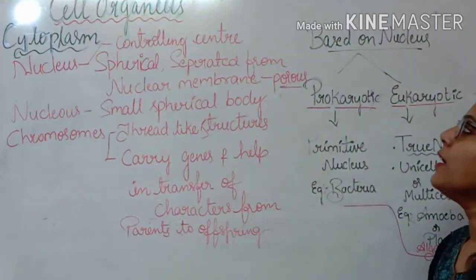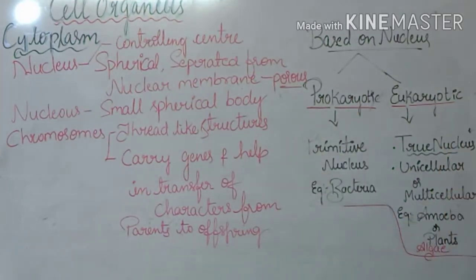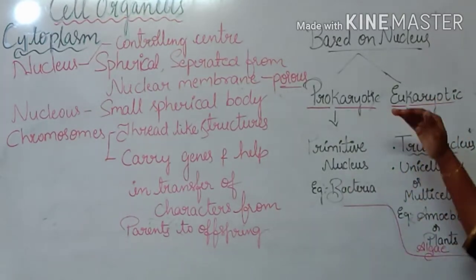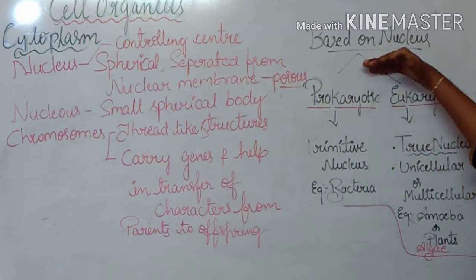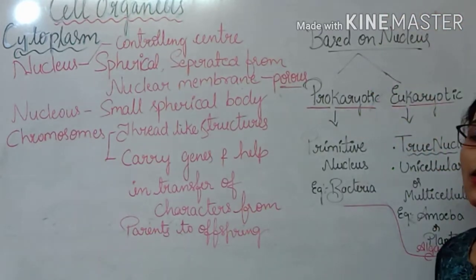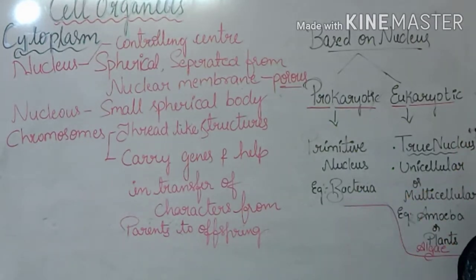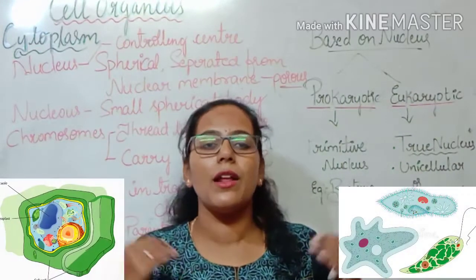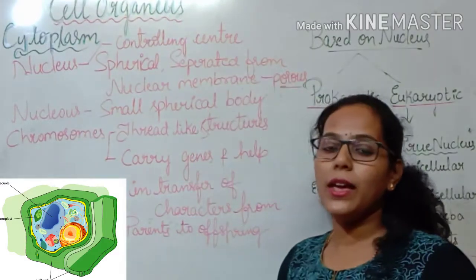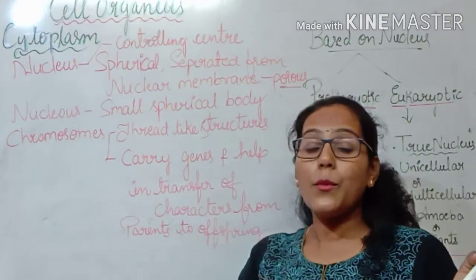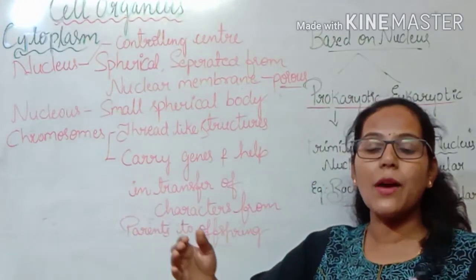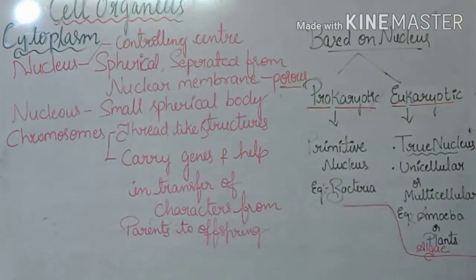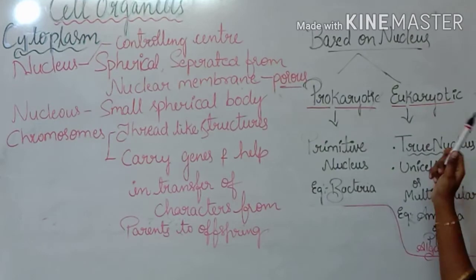Before getting into this session, I would like to tell the difference between the prokaryote and the eukaryote. Prokaryotic and eukaryotic cells are distinguished on the basis of their nucleus. Earlier we discussed about cells based on number — unicellular organisms have a single cell, whereas multicellular organisms have many cells. Now, on the basis of the nucleus, cells are distinguished as prokaryote and eukaryote.